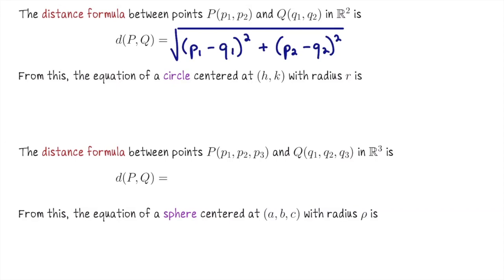If you're wondering where that formula comes from: imagine points P and Q in the plane. You can drop straight down from the higher point and connect over horizontally to form the sides of a right triangle. According to the Pythagorean theorem, the square of the distance from P to Q equals the sum of the squares of the leg lengths. The horizontal length is the distance between the x-coordinates, and the vertical length is the distance between the y-coordinates — which is why we take the square root of the sum of those squared differences.